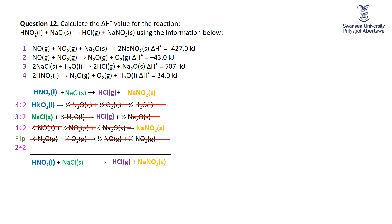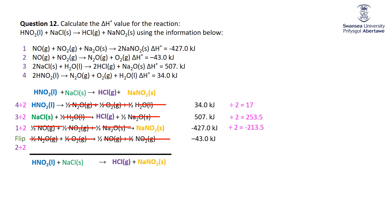Now for the ΔH values: equation 4 was +34, halved → +17. Equation 3 was +507, halved → +253.5. Equation 1 was −427, halved → −213.5. Equation 2 was −43, flipped → +43, then halved → +21.5. Adding all modified ΔH values: 17 + 253.5 − 213.5 + 21.5 = 78.5 kJ. Fun questions once they click — until then it's like banging your head, but when you stop it feels great!